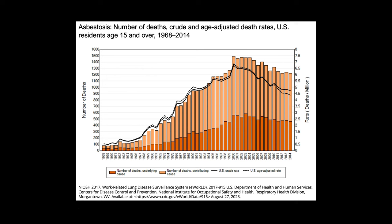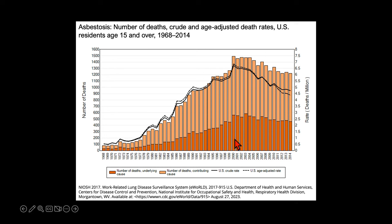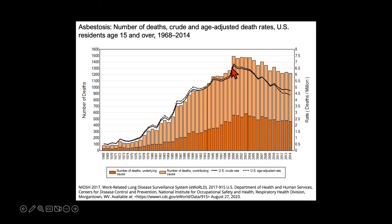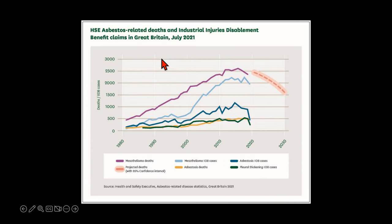Asbestos-related pleural plaques take a long time to develop, usually at least 20 years after the exposure, which is why we still see a lot of patients with asbestos-related pleural disease today, despite the fact that its use in construction has significantly declined since the mid-70s from regulations or outright banned in some countries. Here's a graph showing the number of deaths related to asbestosis in the United States. You can see that after a multi-decade increase in the number of cases, we're now starting to see a decline, and the same trend is also true in the United Kingdom.